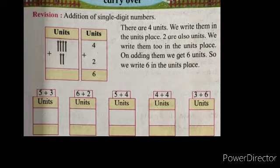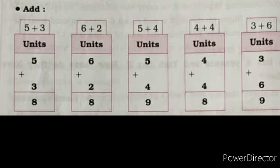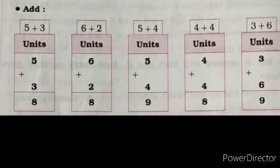Now children, next examples: 5 plus 3, 6 plus 2, 5 plus 4, 4 plus 4, and 3 plus 6. See here — 5 plus 3. You can do it by using matchsticks, or keep the number 5 in mind, take 3 fingers and count on. 5, 6, 7, 8. So your answer becomes 8.